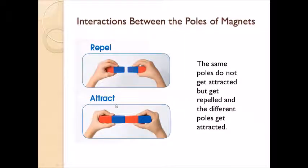Interactions between the poles of the magnet. By doing the activity 7.5, you can understand the same poles do not get attracted but get repelled, and the different poles get attracted. Here you can see south pole and south pole got repelled. Here south pole and north pole got attracted.